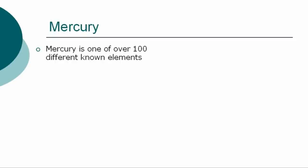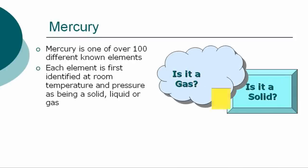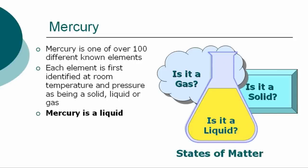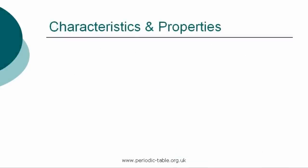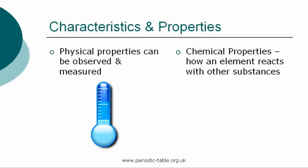The element mercury is one of over 100 different chemical elements known to modern chemistry. Each element is first identified at room temperature and pressure as being a liquid, solid, or gas, referred to as states of matter. Mercury is a liquid at normal room temperature and pressure. Each element has physical properties that can be observed and measured, such as color, density, and odor. The chemical properties are the characteristics that determine how a substance will react with other substances, such as water or oxygen.